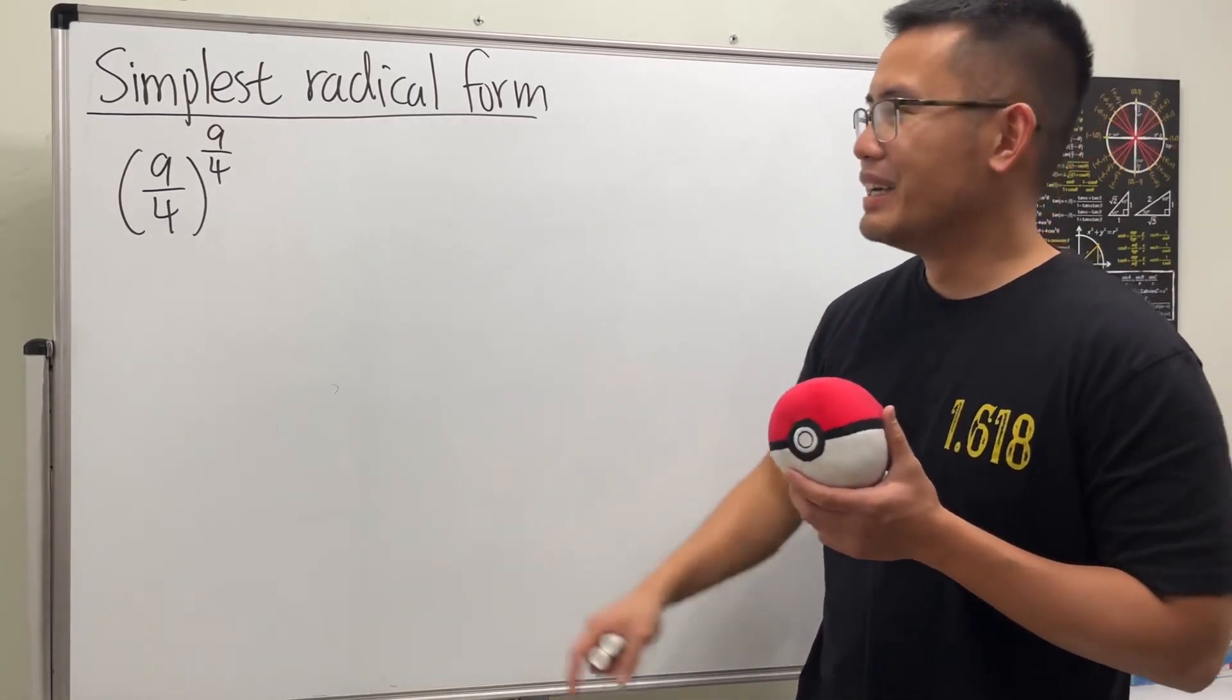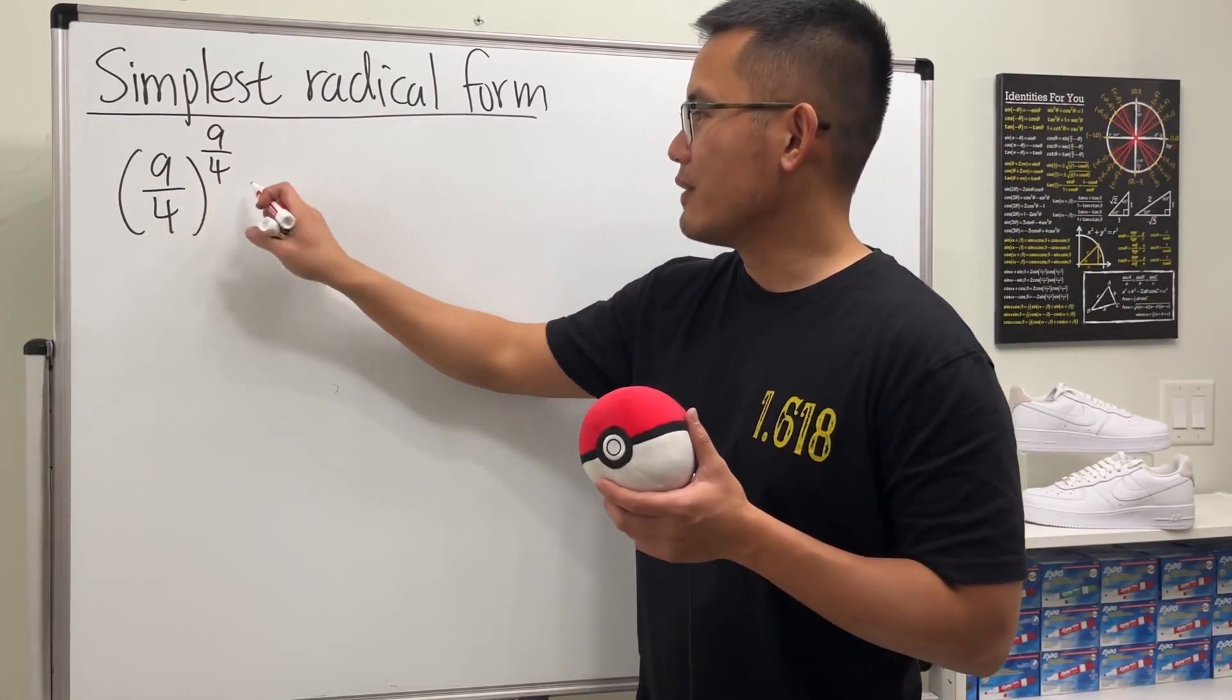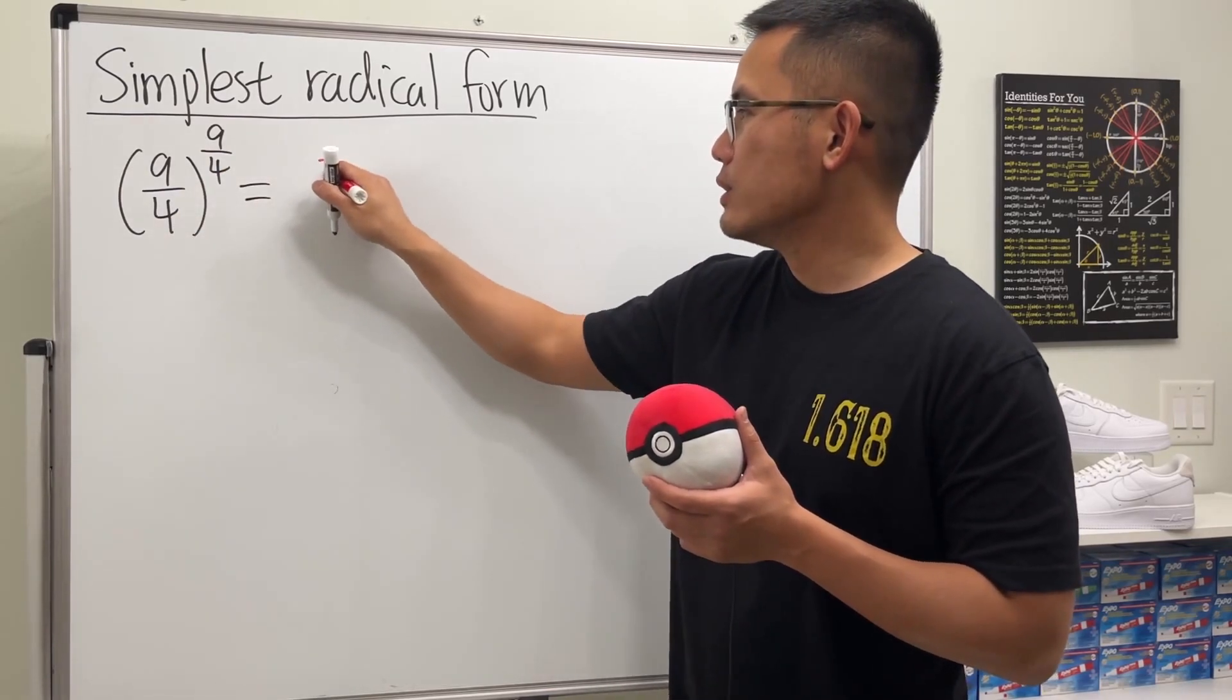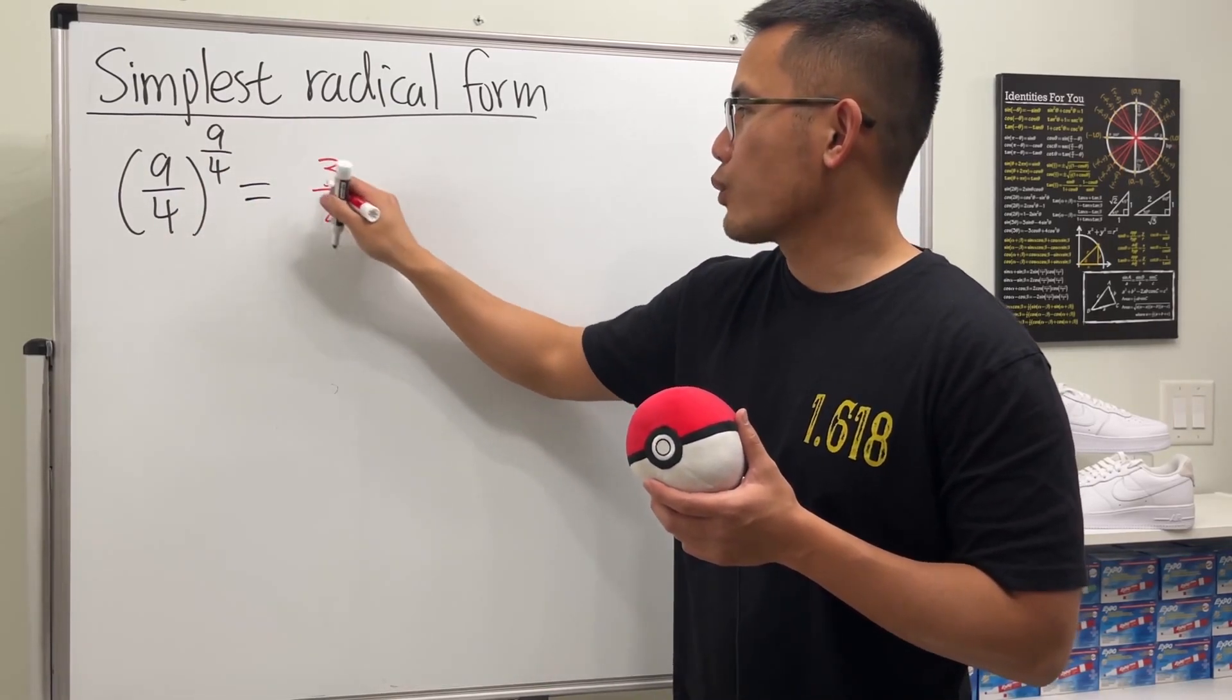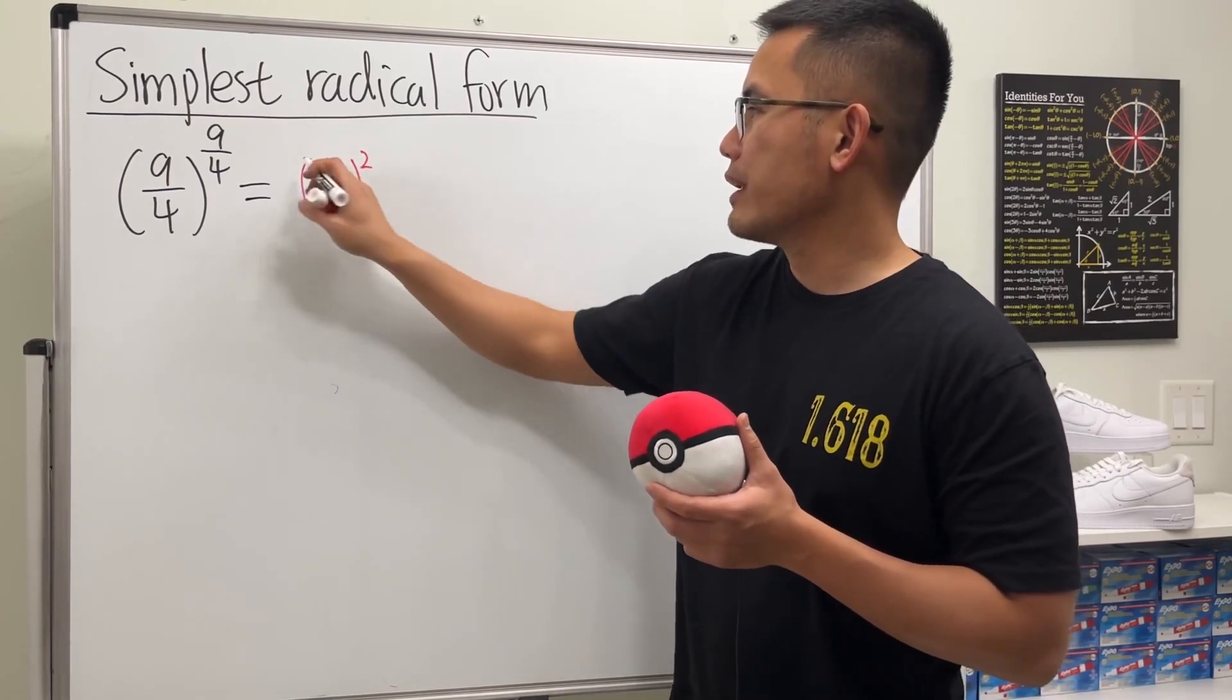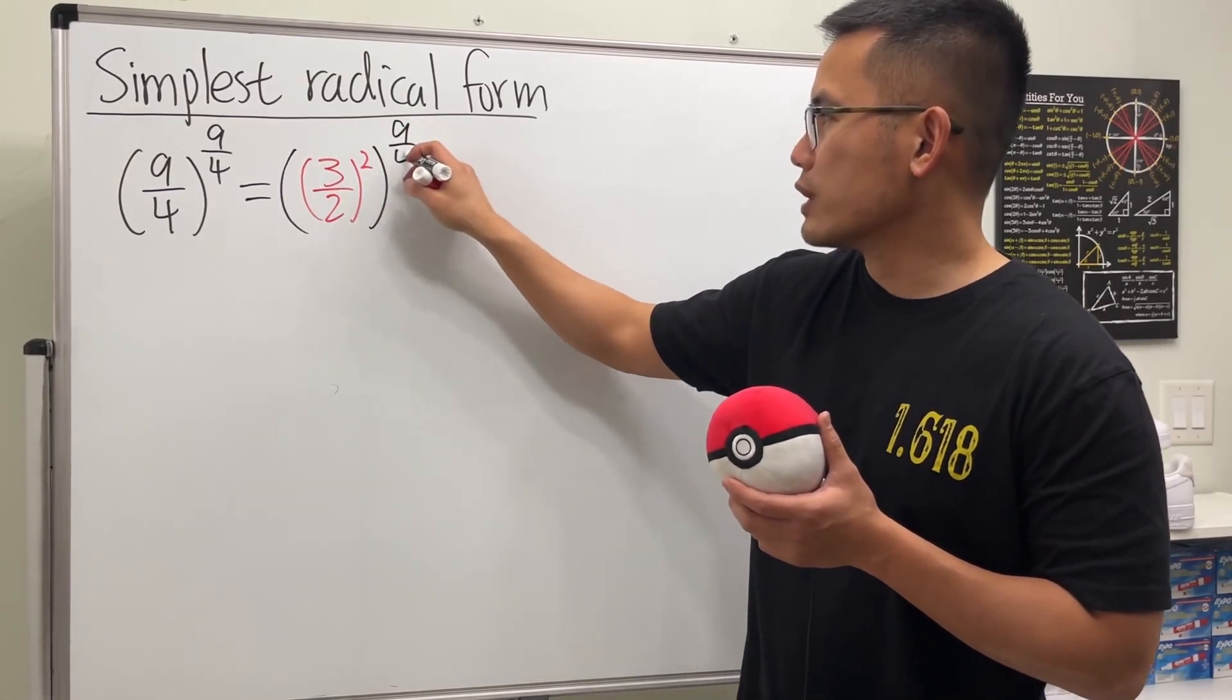So how do we do this? First off, we can rewrite the following: 9 over 4 as 3 squared over 2 squared, so I will just put it down like so, and then raised to the 9 over 4th power.